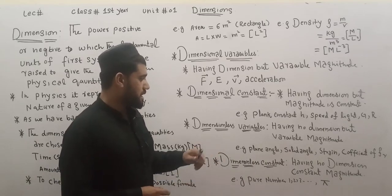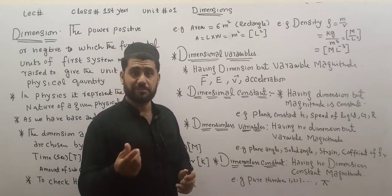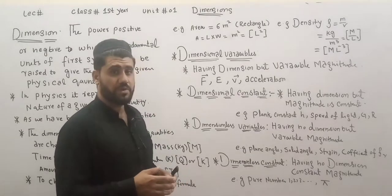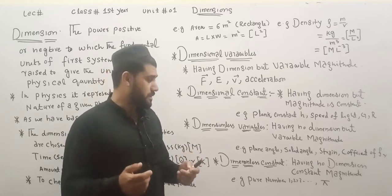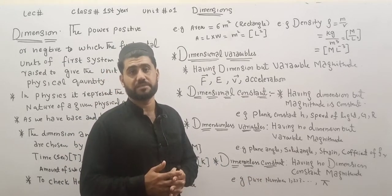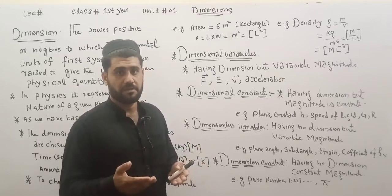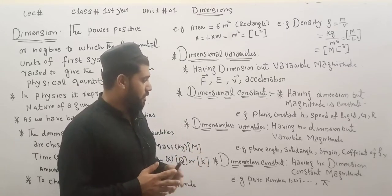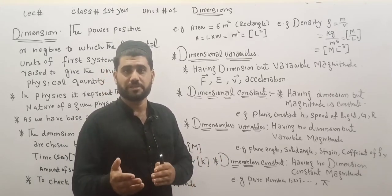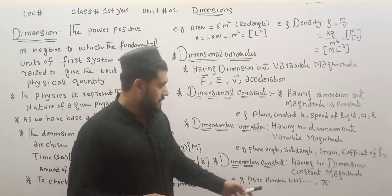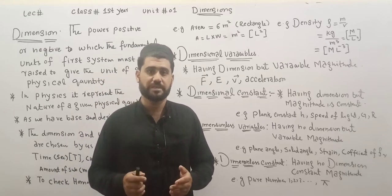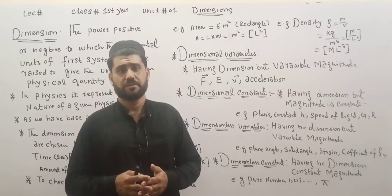This is a dimensionless constant. For example, the number Pi — where it is a dimensionless constant, there is no dimension. It has a unique value. Since Pi is approximately 3.14, if you replace Pi the value is fixed — that is the dimension of posterior physics.